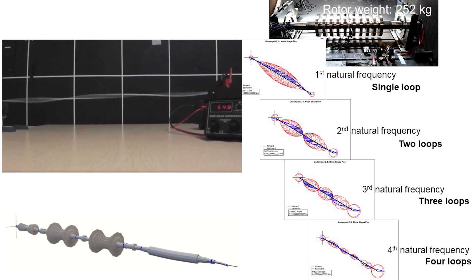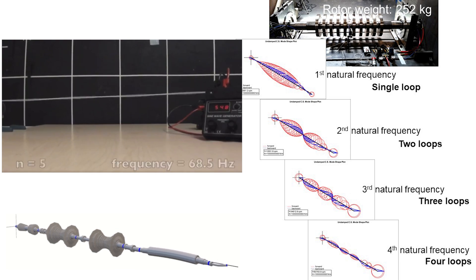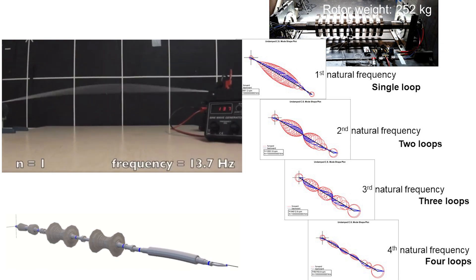The first natural frequency of the shaft produces a single loop. The second natural frequency generates two loops. The third natural frequency forms three loops. The fourth natural frequency results in four loops.